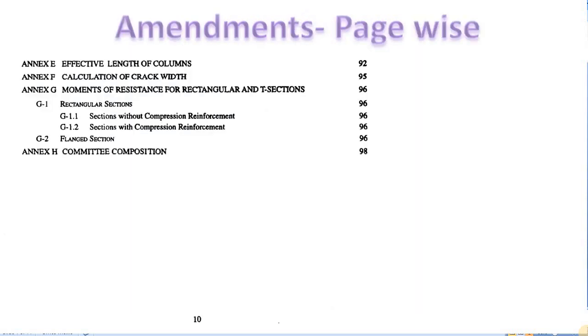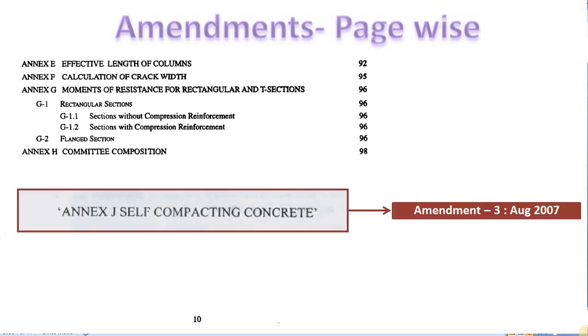Whatever changes made in the tables will be fully covered in all the 3 parts of the video. Now, let us see the page-wise amendments. Page 10 Index: an Annex named Annex J is added in the 3rd amendment 2007 for self-compacting concrete. Let us see the Annex.